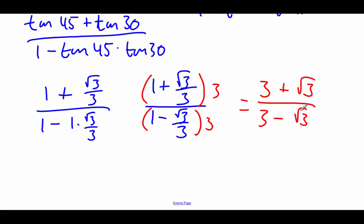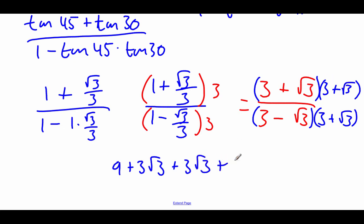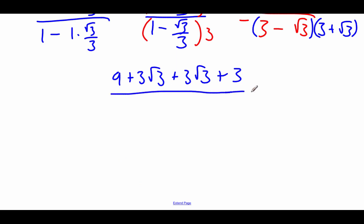Now we're not quite done because we've got a radical in the denominator and we don't typically like to leave those there. So we're going to have to do a little more multiplying to move that up to the top. Since there's a subtraction happening, we're going to use a conjugate and multiply by 3 plus root 3 on top and bottom. Foiling out the top: 3 times 3 is 9, 3 times root 3 is 3 root 3, another 3 times root 3 gives another 3 root 3, and then root 3 times root 3 is just 3.